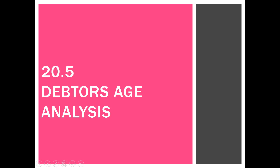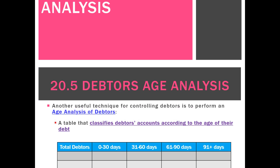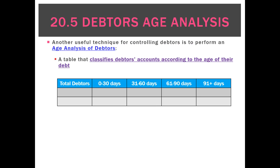Another way we can evaluate debtors is by doing what's called a debtor's age analysis. What we do there is we classify our debtors into groups in terms of how long they've been outstanding.